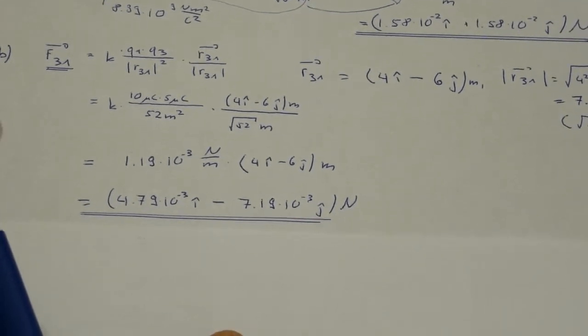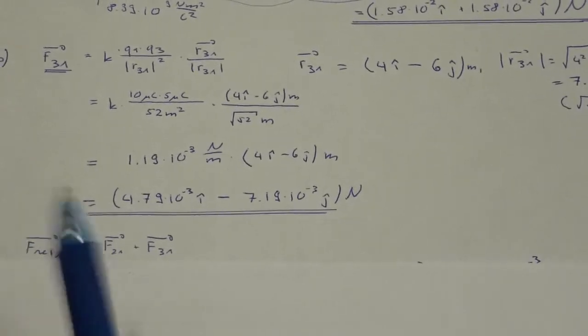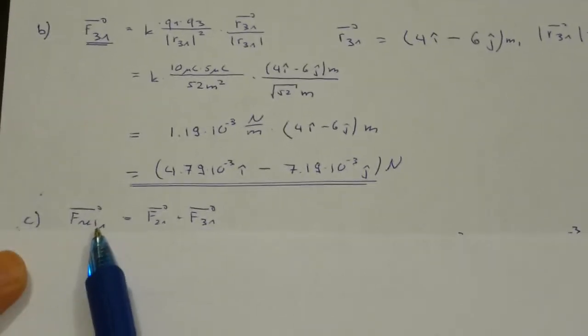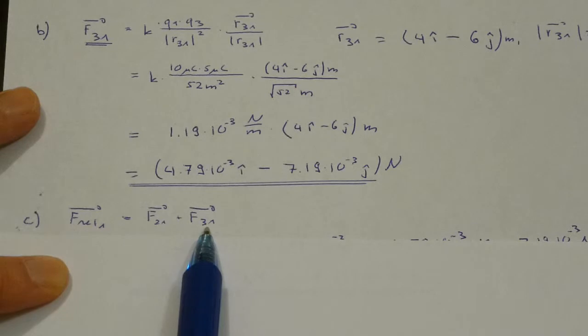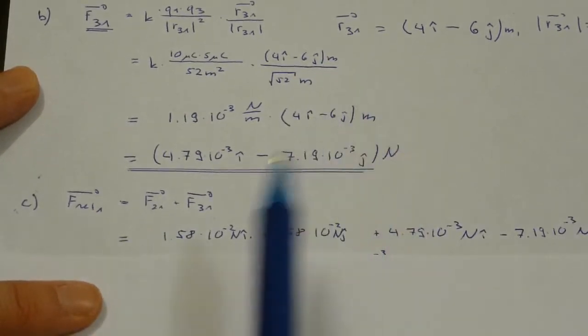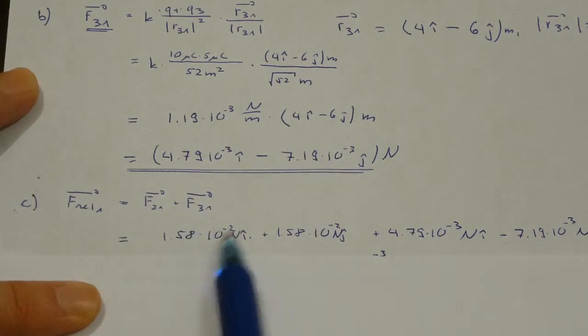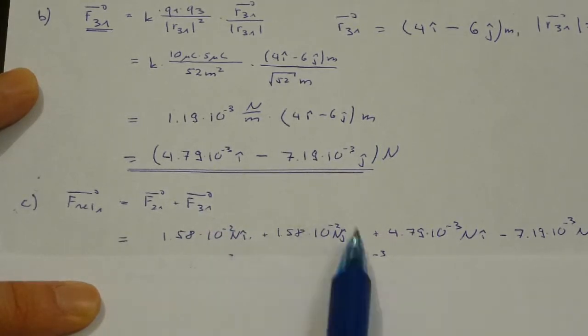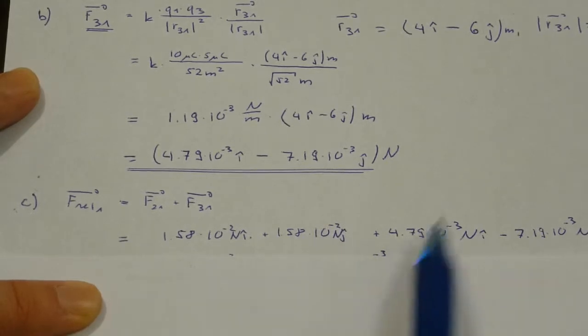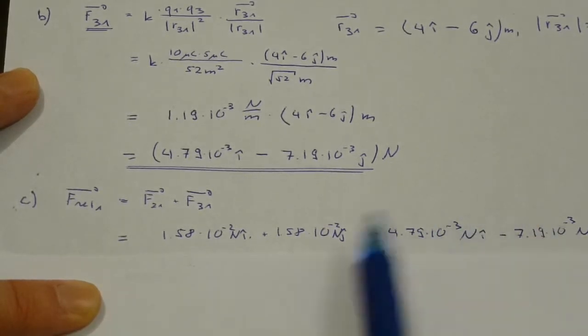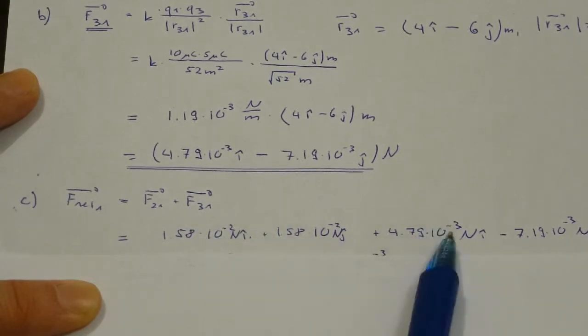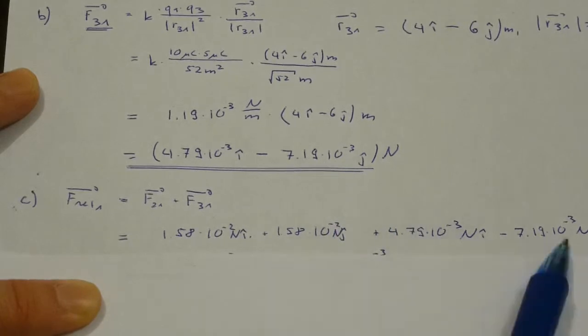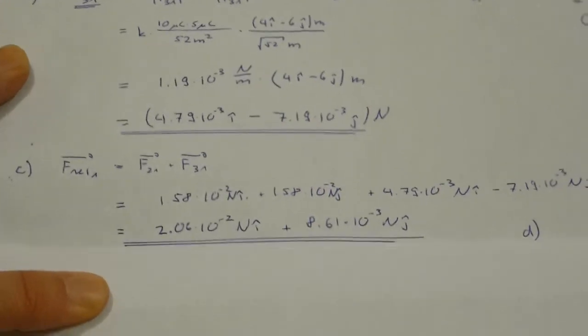If we want the net force on q1, what we need to do is we have to add up the vectors of the force of charge 2 on 1 and the force of charge 3 on 1. We can do that by components. Basically we write the force of 2 on 1 in i and j parts, and we add i and j parts of the force of particle 3. Then we add up the i components and the j components, and here is what we're going to get.